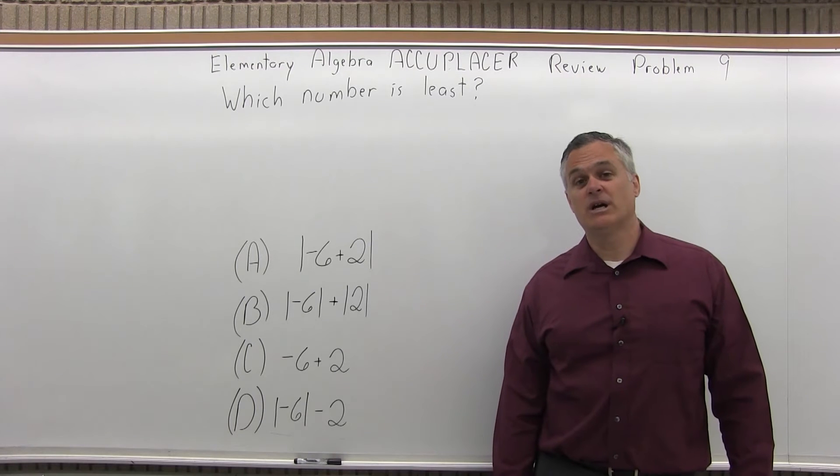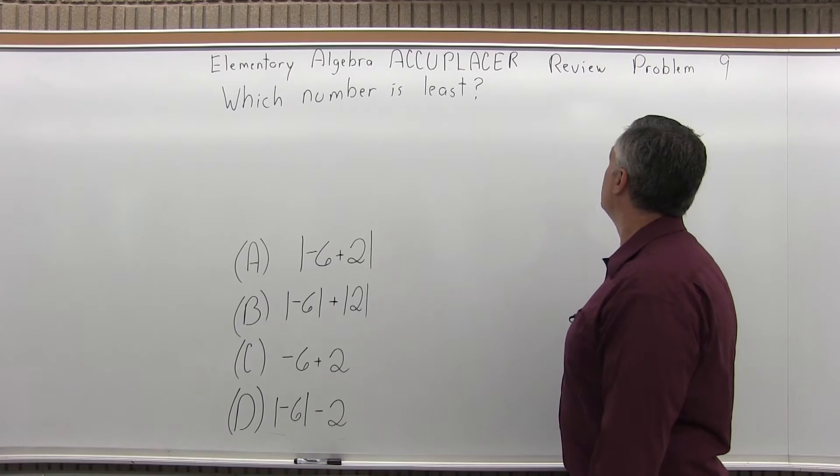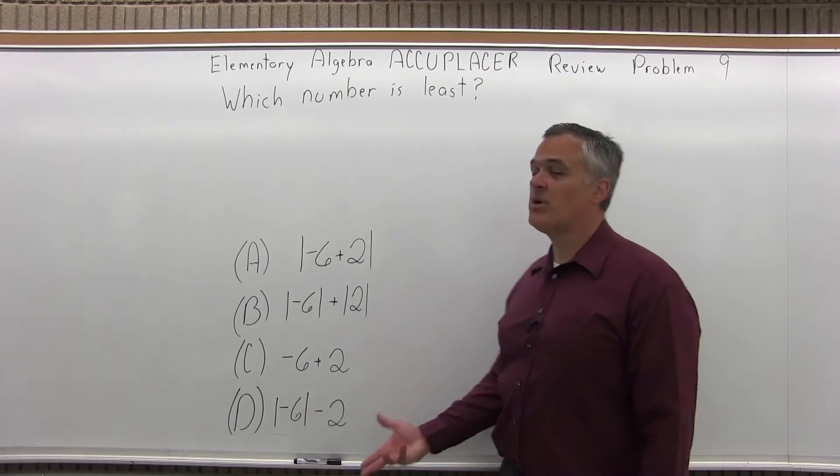This is the Elementary Algebra Accuplacer Review Problem 9. It says which number is the least? And we have four possible options.